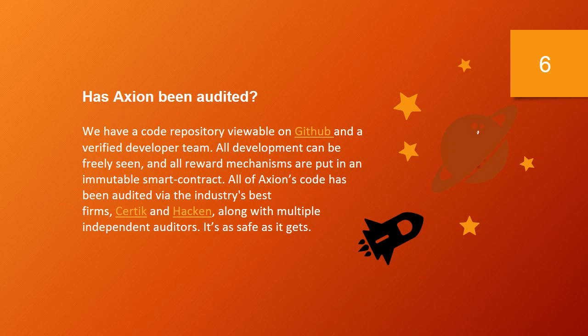Has Axion been audited? We have a code repository viewable on GitHub and a verified developer team. All development can be freely seen, and all reward mechanisms are put in an immutable smart contract. All of Axion's code has been audited via the industry's best firms — Certiq and Hakim — along with multiple independent auditors. It's as safe as it gets.